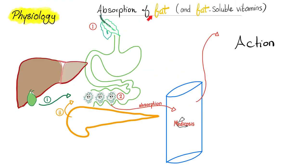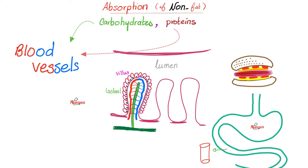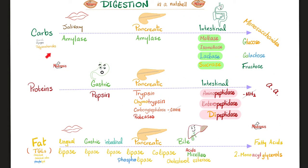In order to absorb fat and the fat-soluble vitamins K, E, D, and vitamin A, you need three organs to be healthy: number one, liver and biliary system; number two, pancreas; number three, the gut, where the actual absorption takes place. If you are water-soluble — like carbohydrates, proteins, and the water-soluble vitamins B and C — you will go to blood vessels, not to the lacteals. But if you are fat-soluble, you're going to the lacteal, which is in the core of the villus. This is the story of carbohydrate digestion, the story of protein digestion, and the story of fat digestion.